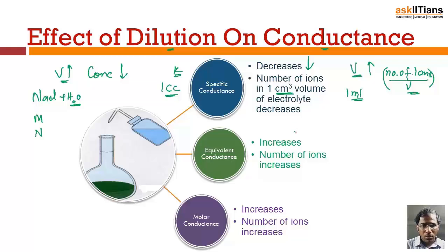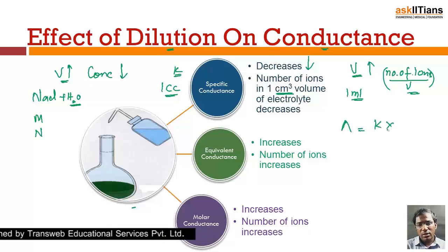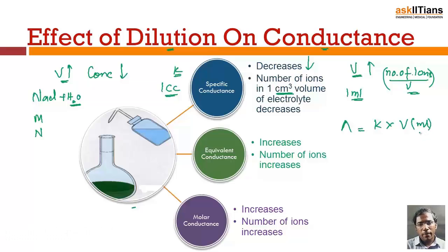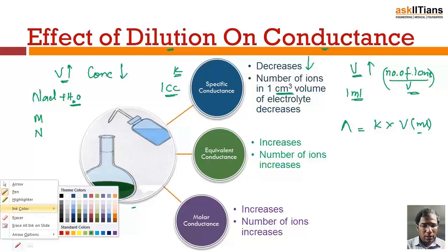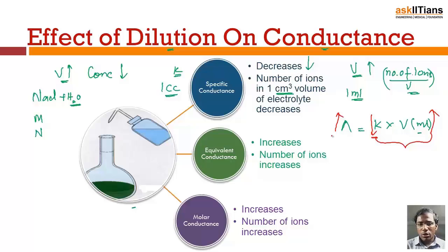Now let's see how equivalent conductance is affected by dilution. Equivalent conductance equals specific conductance multiplied by the volume of the solution in milliliters. We have seen that specific conductance decreases upon dilution, but the volume increases upon dilution, and this increment in volume is more than the decrement in conductivity. As a result, the equivalent conductance increases upon dilution, due to the increase in number of ions after dilution.